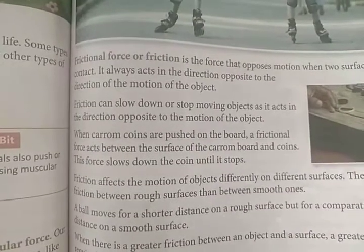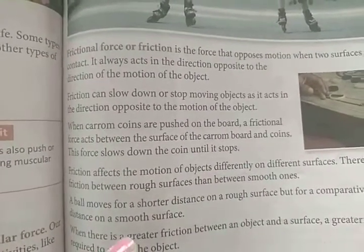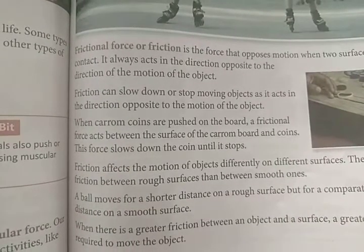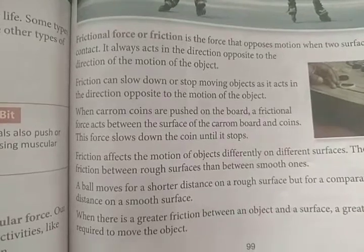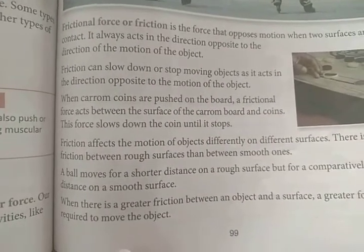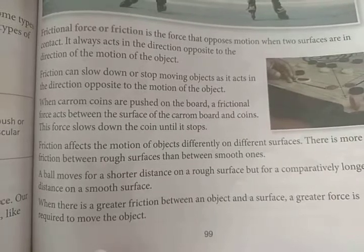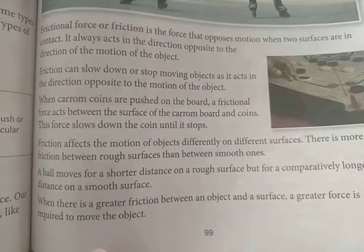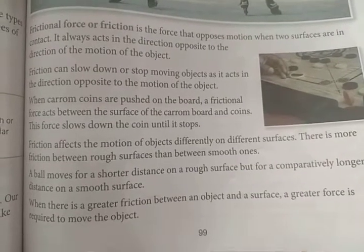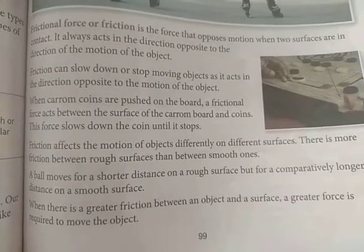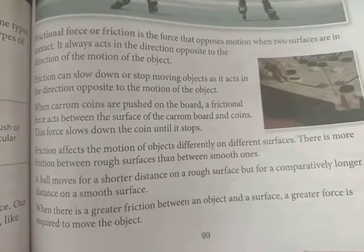Friction can slow down or stop a moving object as it acts in the direction opposite to the motion. For example, when carom coins are pushed on the carom board, a frictional force acts between the surface of the board and the coins, slowing down the coins until they stop.